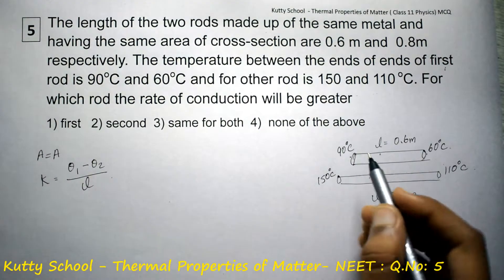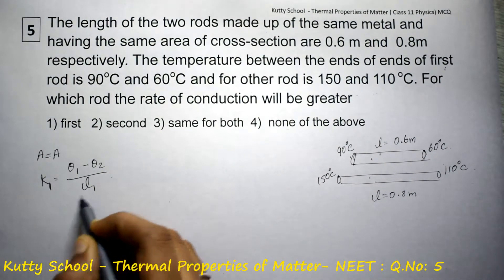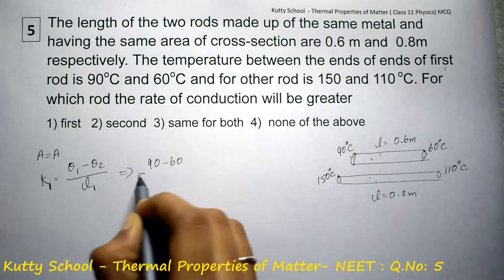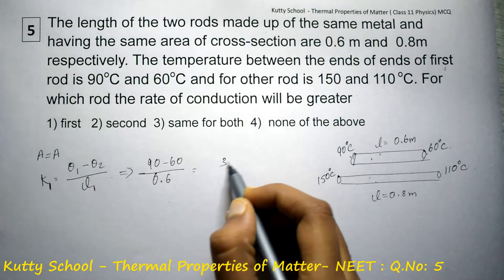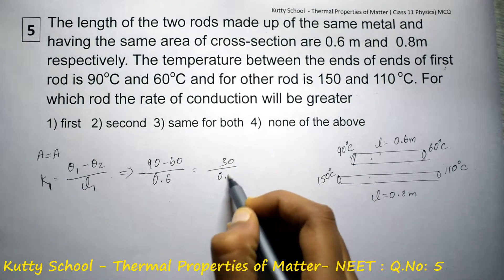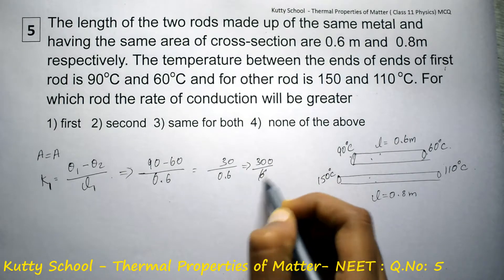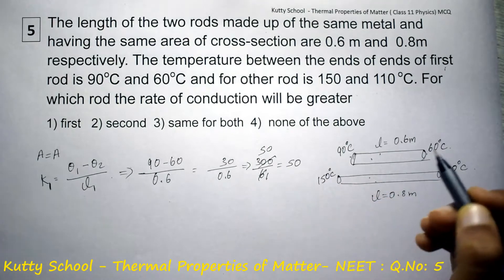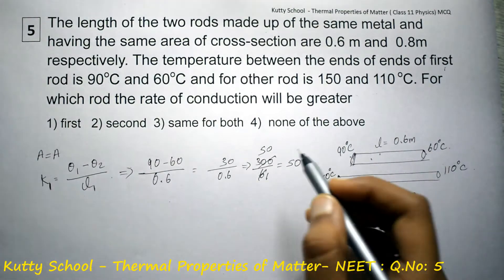For the first rod, k1 equals theta 1 is 90 minus 60 by length 1 is 0.6, which equals 30 by 0.6, equals 300 by 6, which is 50. So the rate of conduction is 50.